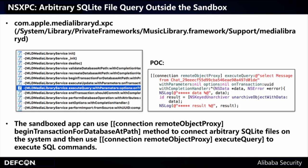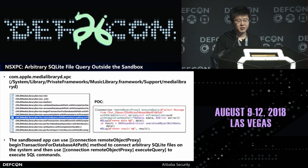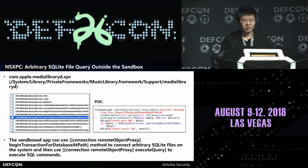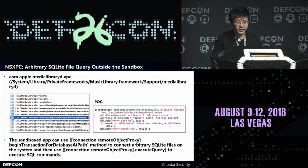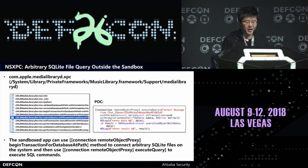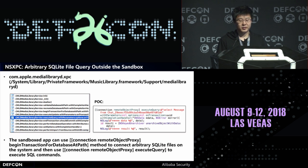The second vulnerability is in medialibraryd NSXPC. It can be exploited to read, write, and query arbitrary SQLite files outside the sandbox. Since the remote object of the service has mobile privilege and does not check the input path of the SQLite file, an attacker can achieve arbitrary queries on files on the system. The attacker can use beginTransaction for database at path to connect to arbitrary SQLite files on the system, and then use executeQuery to execute SQL commands on it. For example, a malicious app can leverage this vulnerability to modify SMS messages or emails on the device.